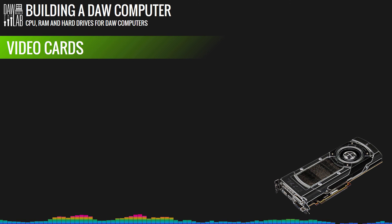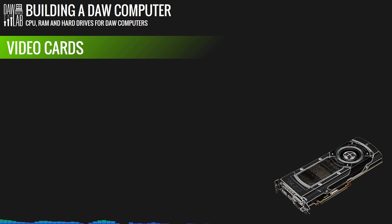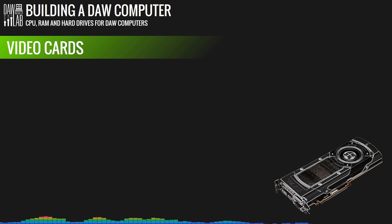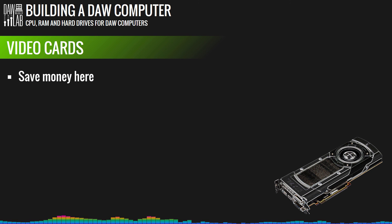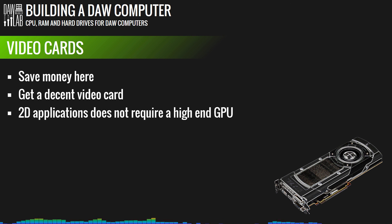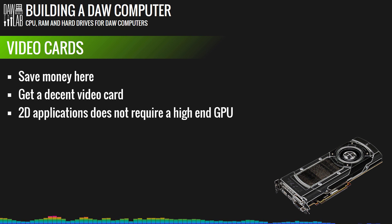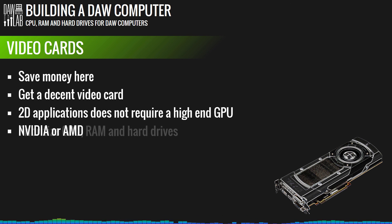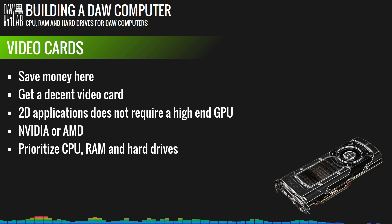What about the video card? This is actually where you want to save money. A decent video card is required for a DAW to run smoothly, but you won't need anything exceptional — even if you're composing music for video. Most music applications today are 2D rather than 3D, and high-end graphics cards are mostly needed for 3D work like gaming or animation software. I'd recommend a card from Nvidia or AMD, but don't overspend here — put your money into a good CPU, RAM, and fast hard drive instead.